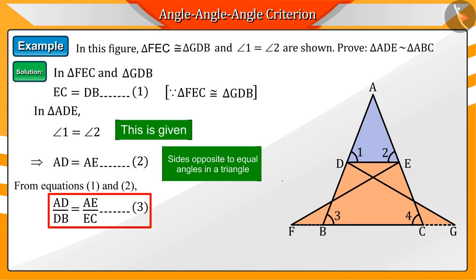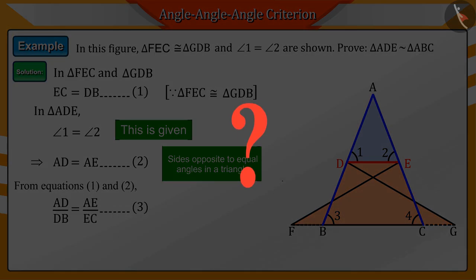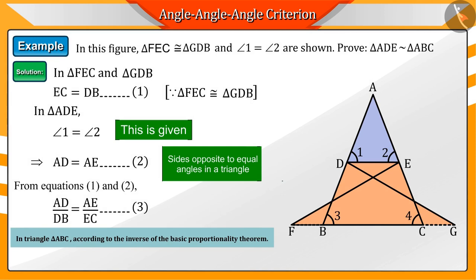Equation 3 tells us that the line DE divides the sides AB and AC of triangle ABC into equal ratios. According to the inverse of the basic proportionality theorem, we can say that the lines DE and BC are parallel lines.